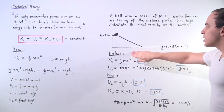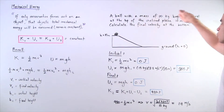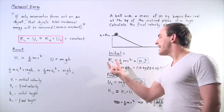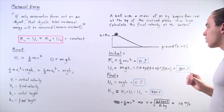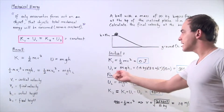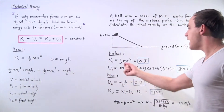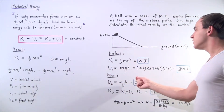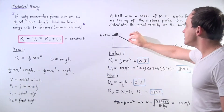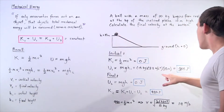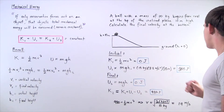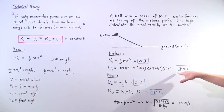Let's begin with the initial conditions. Initially, our object is at rest, which means it has a velocity of zero meters per second, so our initial kinetic energy is zero. Our gravitational potential energy is given by MGH1, where M is 10 kilograms, G is 9.8 meters per second squared, and H1 is 10 meters. Plugging in our values, we calculate our initial gravitational potential energy to be 980 joules.